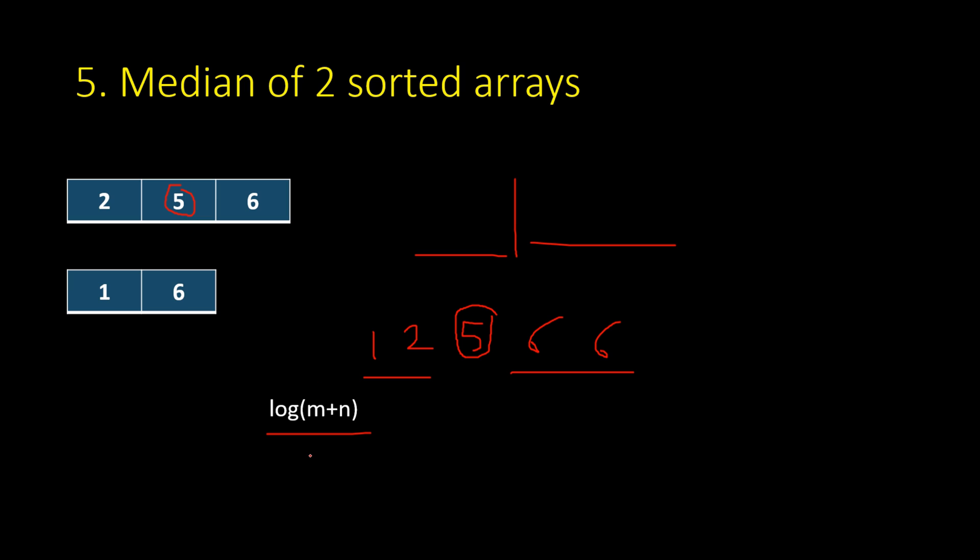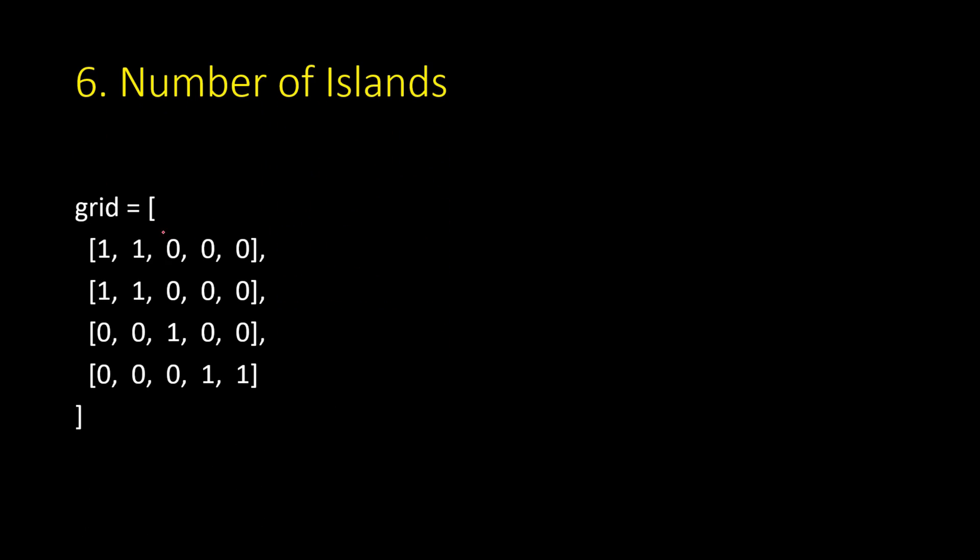Next is number of islands. It's a standard graph problem where you have some connectivity rules - let's say just top, down, left, right four-neighbor connectivity rules. Using that you see that 1s are land, 0s are water.